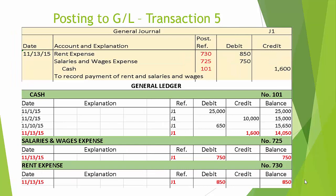Transaction number five is a compound entry, since this journal entry contains more than one debit or credit. The first debit is the rent expense of 850, posted in general ledger account 730. Looking at the bottom of the screen, the general ledger page for rent expense shows the date November 13th, the reference to the journal J1, and 850 posted in the debit column, giving a balance of 850 — a debit balance. The salaries and wages expense debit of 750 is entered in general ledger account 725. You see the date November 13th, reference J1, posted under the debit column: 750, with an ending balance of 750.